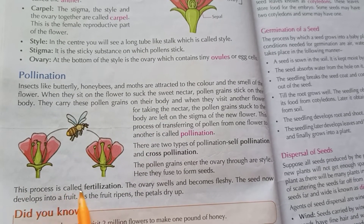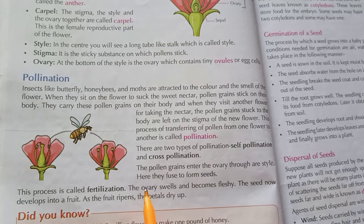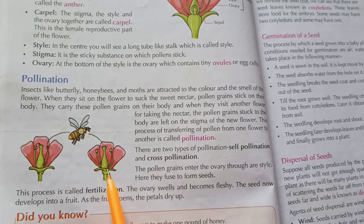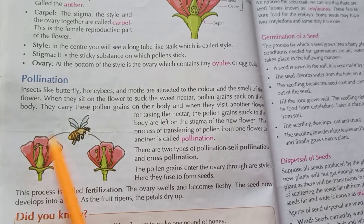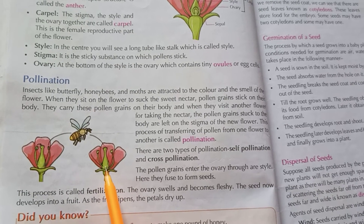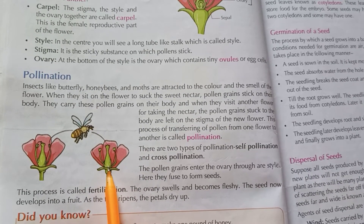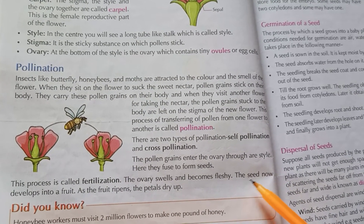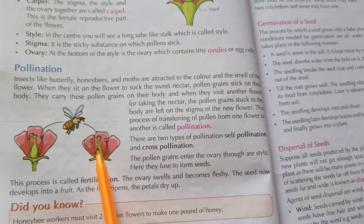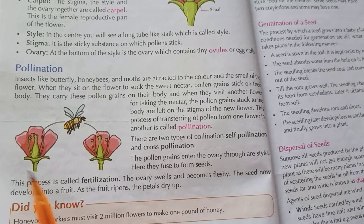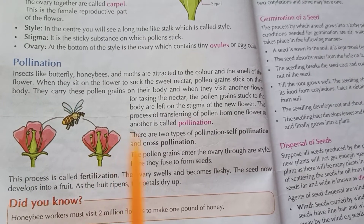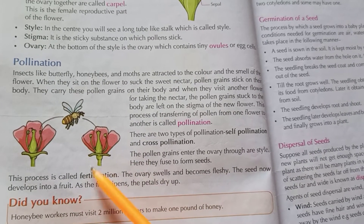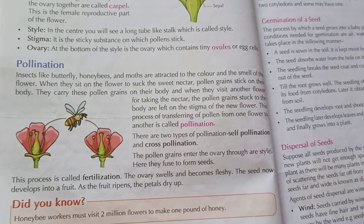This process is called fertilization. When fertilized, the ovary swells and becomes fleshy and very big. The seeds now develop inside the fruit. As the fruits ripen, the petals dry up.